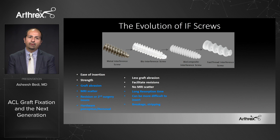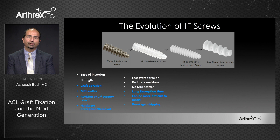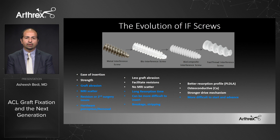As things evolved, we moved to first-generation biocomposite screws. These improved by having no MRI scatter and facilitated revisions because they could either be easily removed or drilled through at the time of revision surgery. But these weren't necessarily the best in terms of time-zero strength — they could break, they could slip. We knew improvements in materials could achieve great time-zero biomechanical strength while also being osteoconductive.